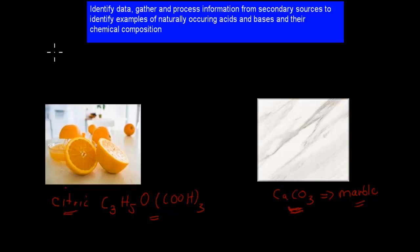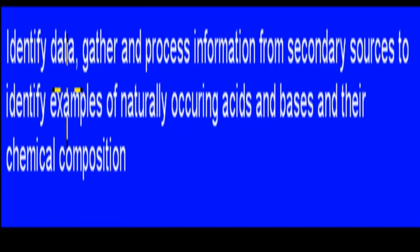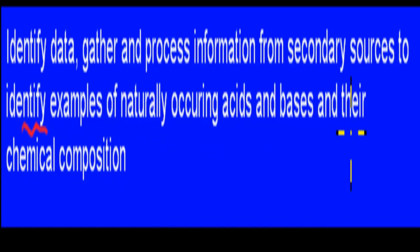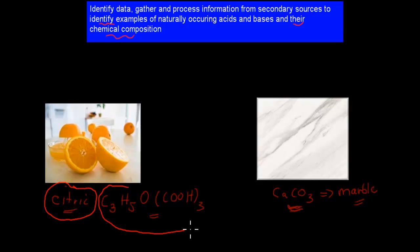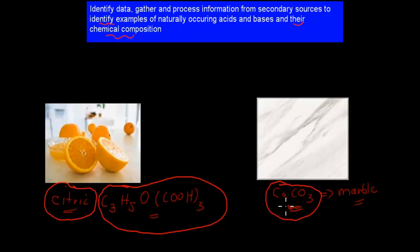Why did I mention all this? Because the actual dot point itself says: identify, gather, and cross information from secondary sources to identify examples of naturally occurring acids and bases and their chemical composition. We're going to go over a couple of different examples. We'll go over the names of them, the chemical composition, and where we can find them. Those should be the important points from this dot point.